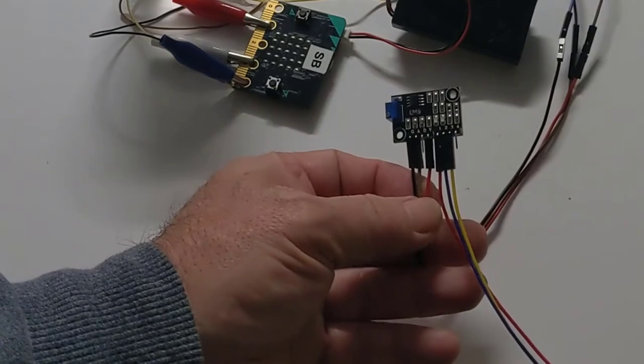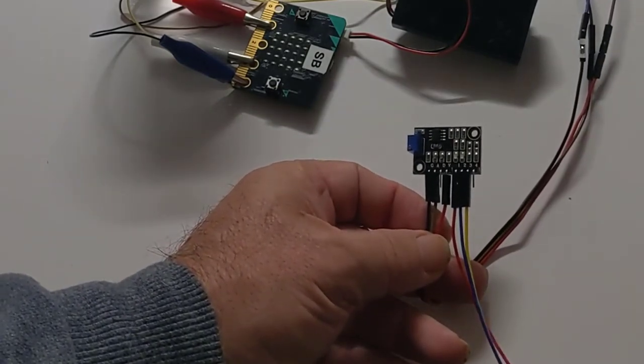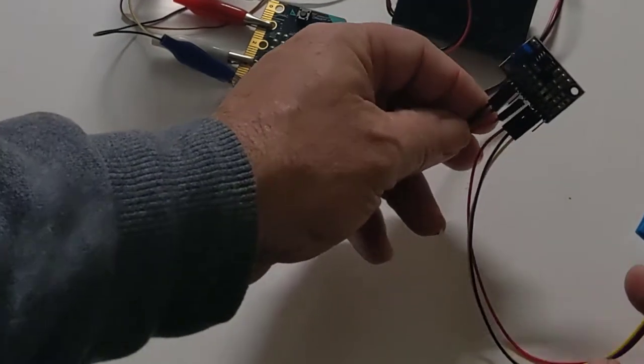As you can see the red wire goes into one, the blue wire into two and the yellow wire into three.